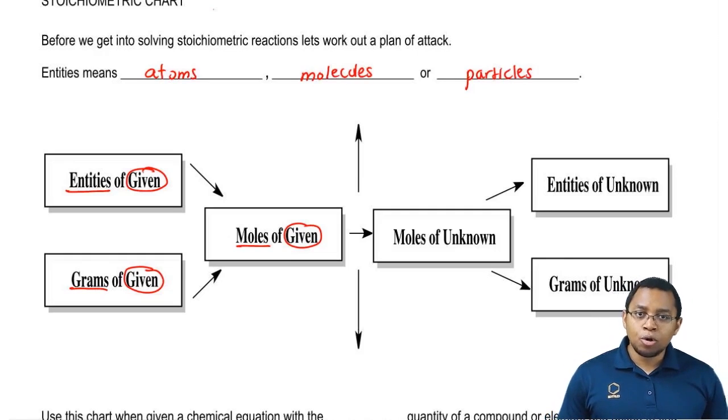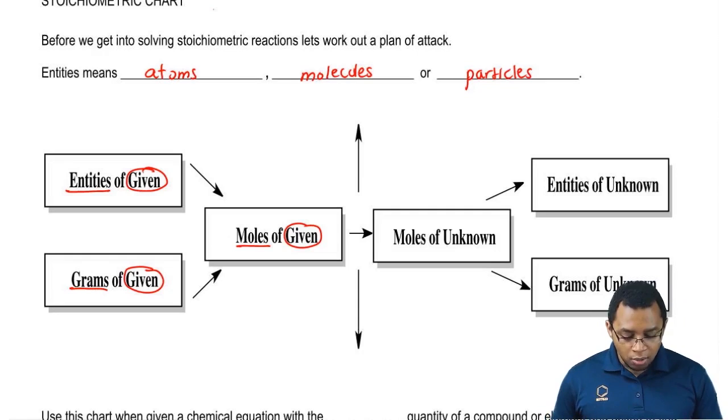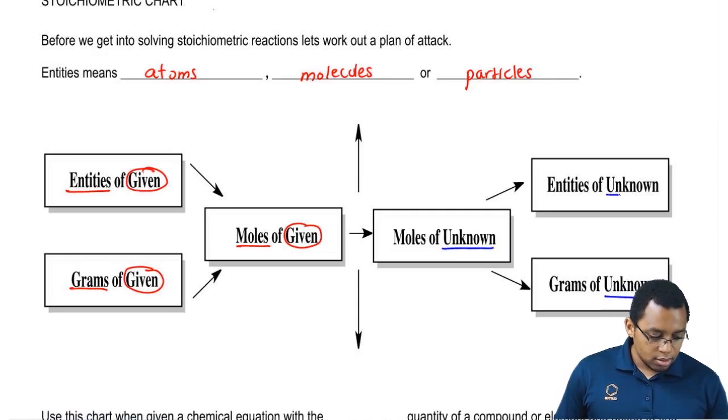The other part of the stoichiometric chart deals with unknown information, basically what we're asked to find. And we're going to say this unknown information, we could be asked to find moles, grams, or entities.